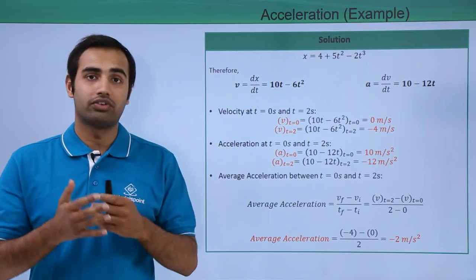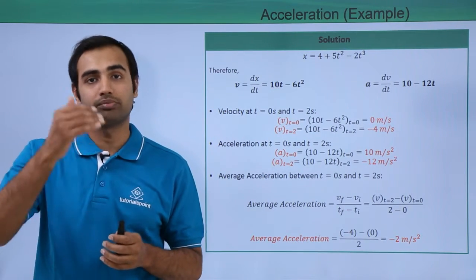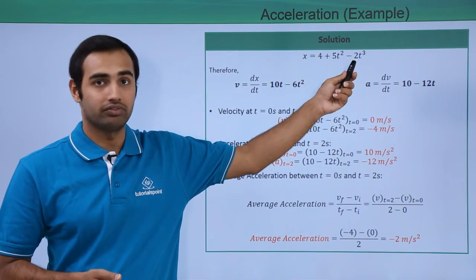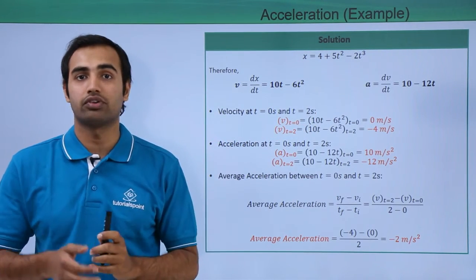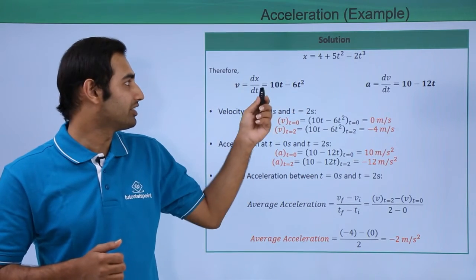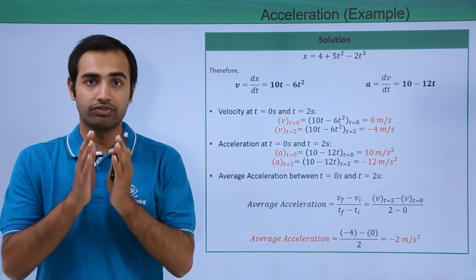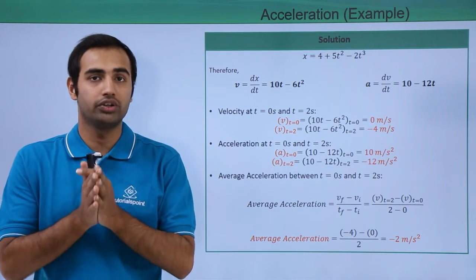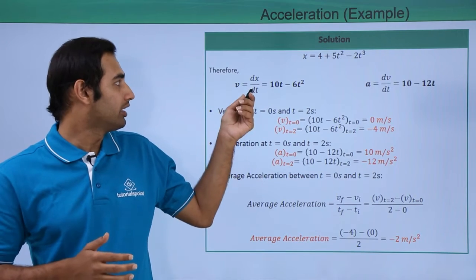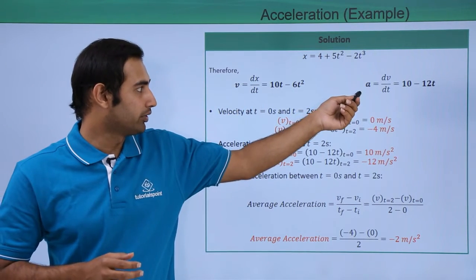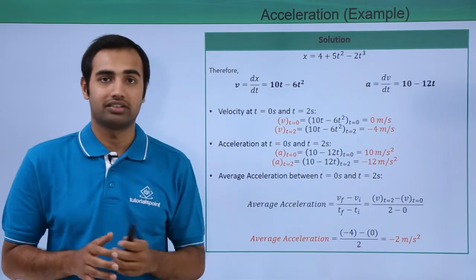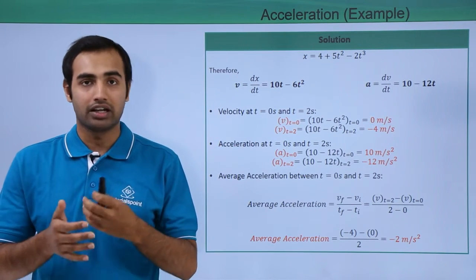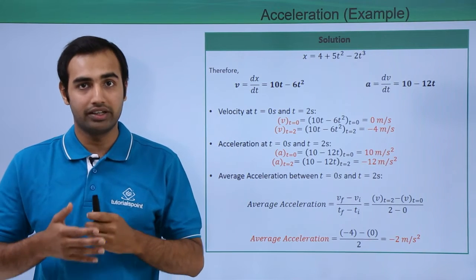Starting off, we know that velocity is simply the rate of change of position with respect to time, or displacement with respect to time. So the derivative of this expression with respect to time will give me the expression for velocity. If I differentiate this I'll get 10t minus 6t squared. Similarly, if I differentiate velocity with respect to time I'll get acceleration as 10 minus 12t. Now I have nice expressions for velocity and acceleration, and I can plug in the value of time to get my desired results.